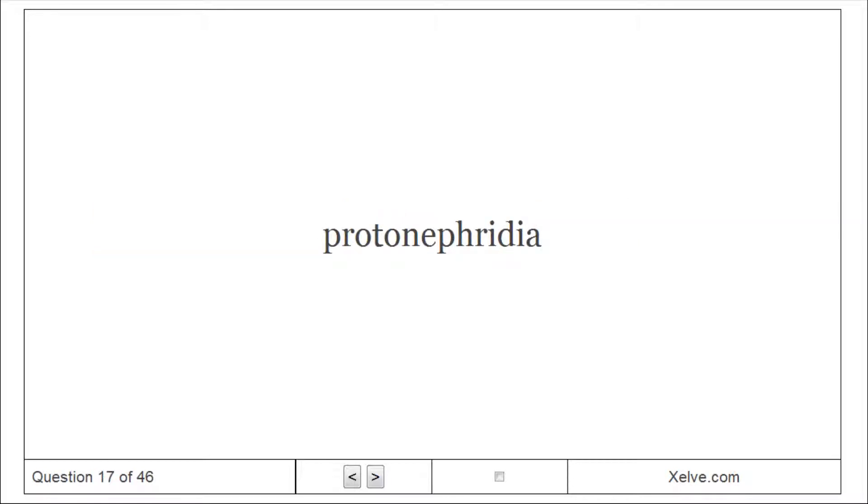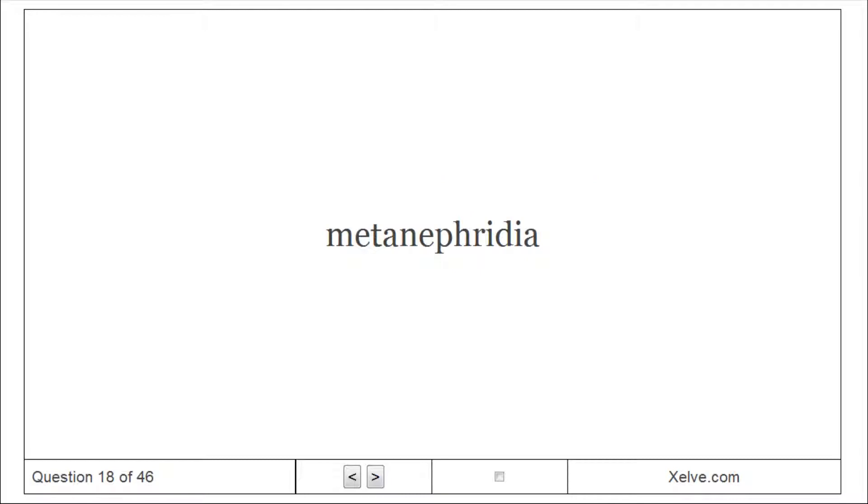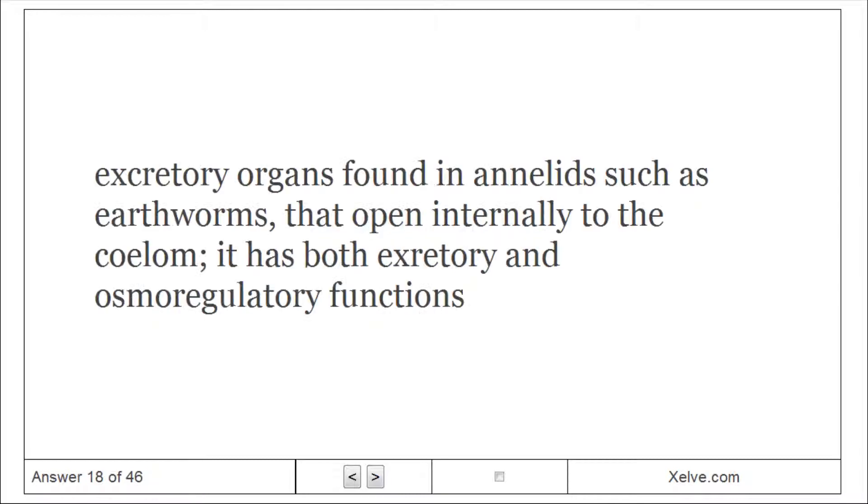Protonephridia: An excretory system in flatworms that use branching internal tubules that function mainly in osmoregulation. Metanephridia: Excretory organs found in annelids such as earthworms, that open internally to the coelom, with both excretory and osmoregulatory functions.